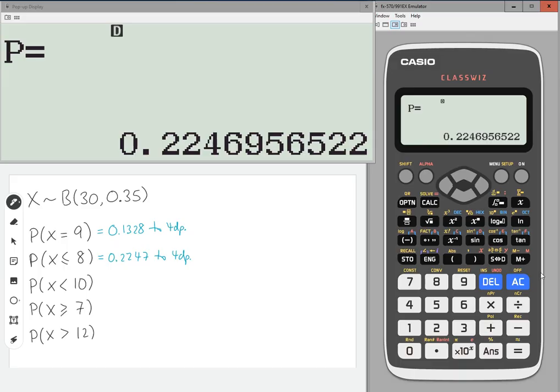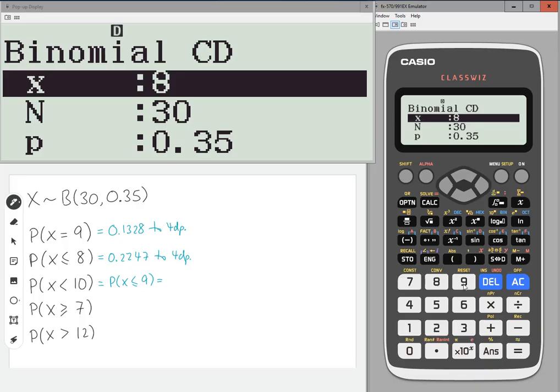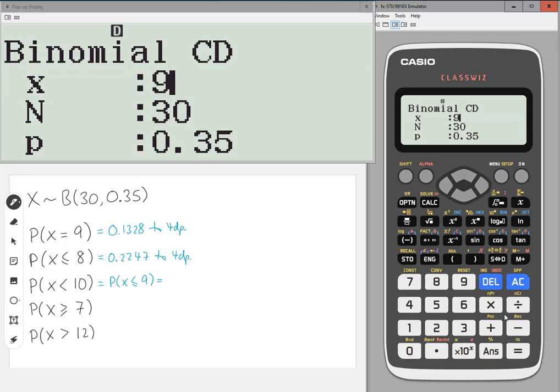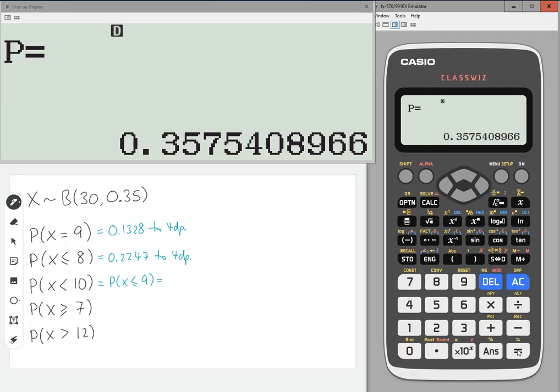Now, the next one is probability of x being less than 10. Your calculator does not find you less than. It finds you less than or equals to. So, you need to know that less than 10 means from 0 up to 9, which is the probability of x being less than or equal to 9. On my calculator, I'm just going to change x now for 9, and 4 decimal places is 0.3575.